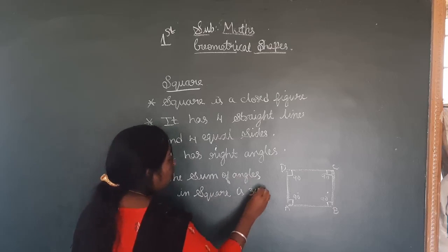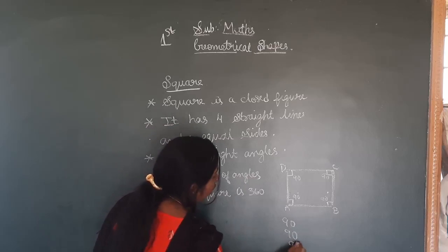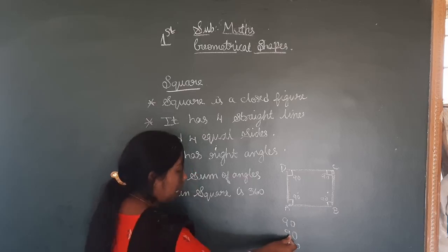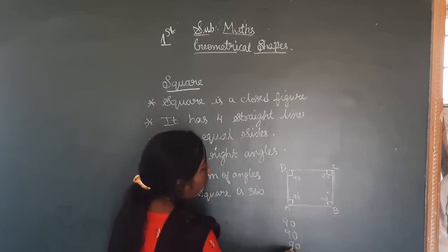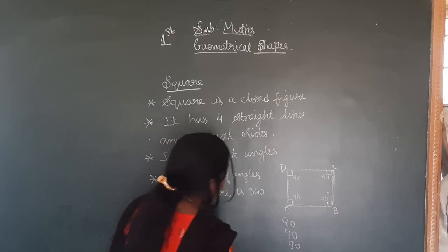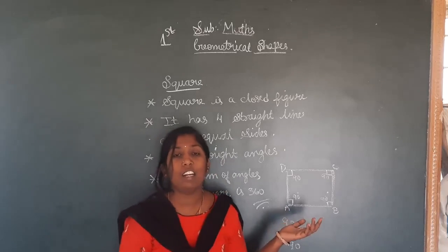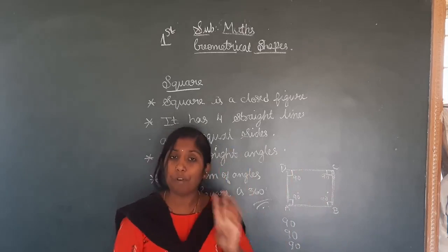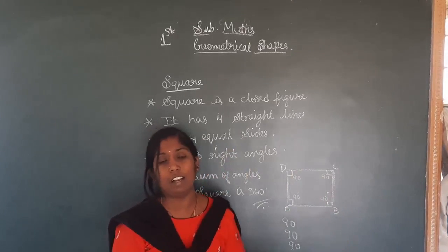360. If you add 90 plus 90 plus 90 plus 90, the sum of the angles in the square is 360 degrees. Square has all straight lines and four equal sides. Understood? Let's do this.